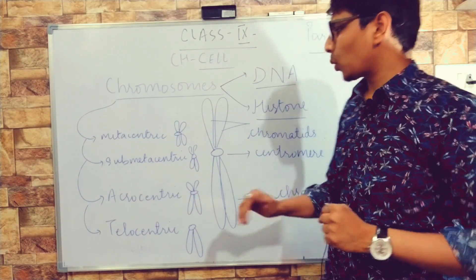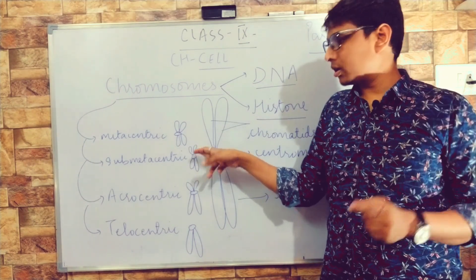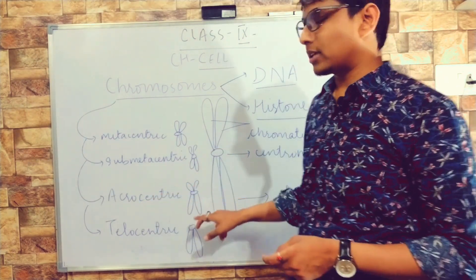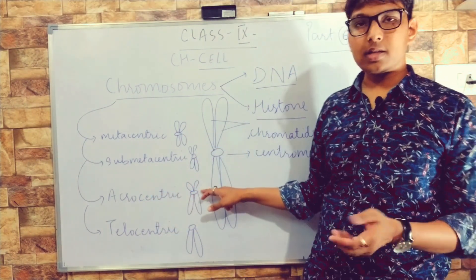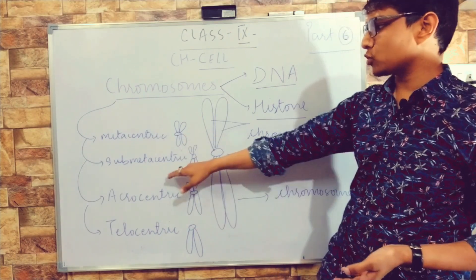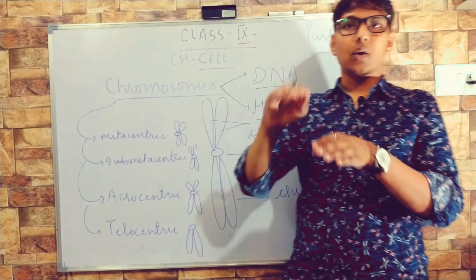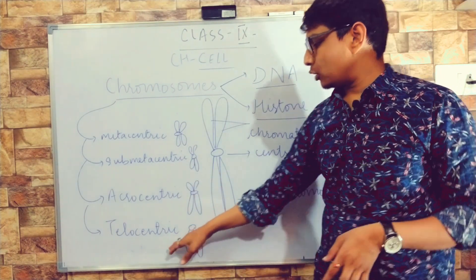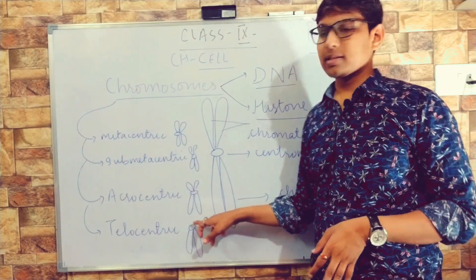In acrocentric, the centromere is, compared to sub-metacentric, shifted more towards one side. And in telocentric, the centromere is nearly at the top.